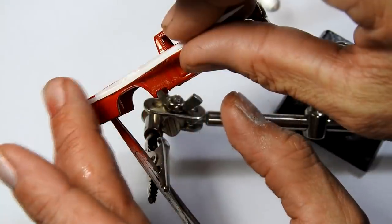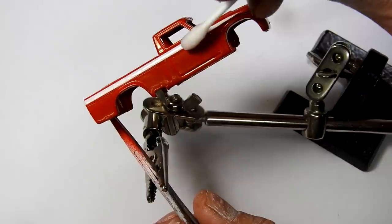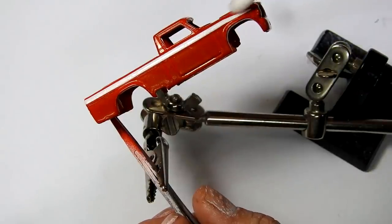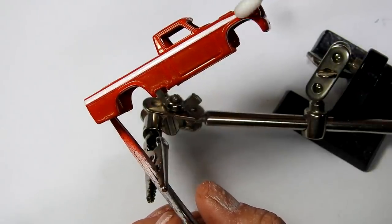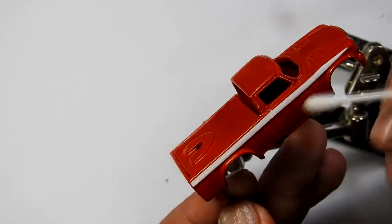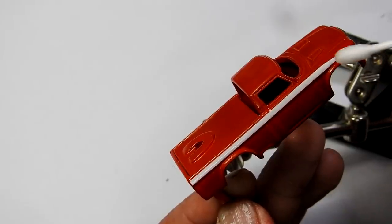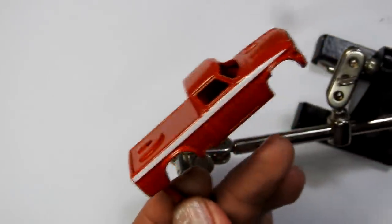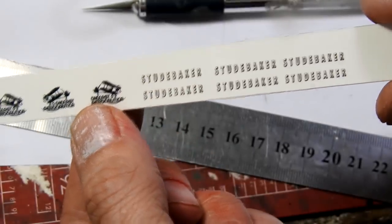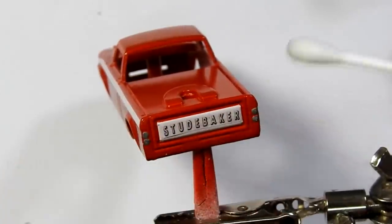Now I'm going to use some white decal paper to apply some stripes along the side. Here we go. And here I've designed some logos, Die Fast Aeronautics, and also the Studebaker text to go on the rear there.